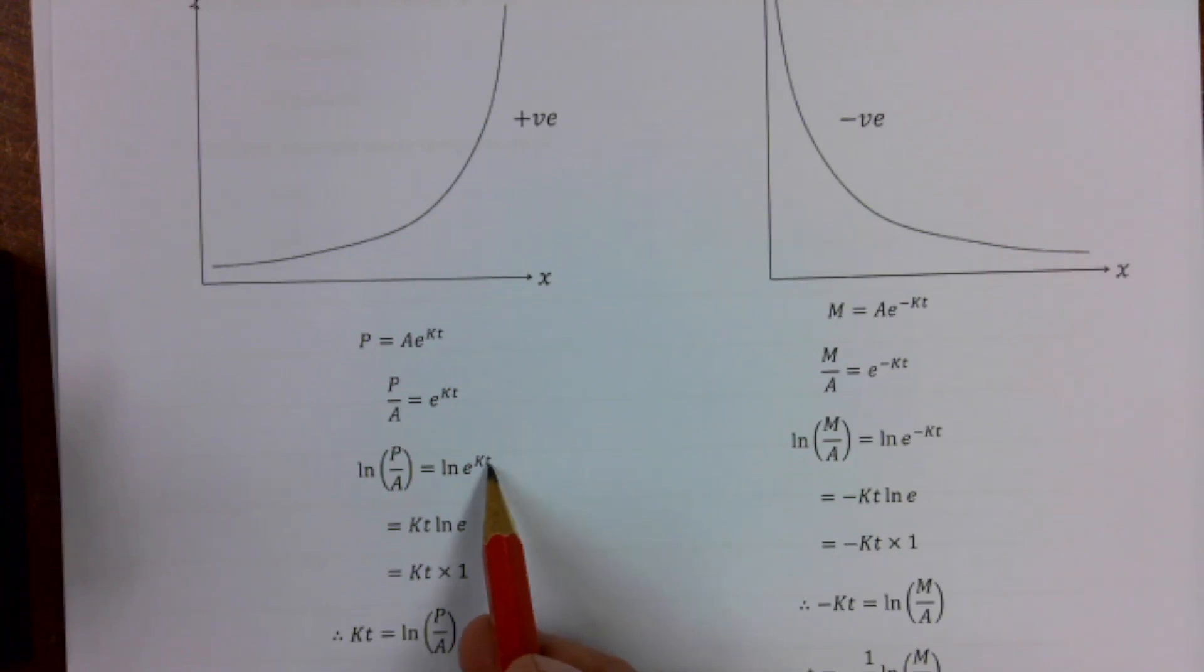Remember rules of logs that we can do. Bring that kt to the front, so kt·LN(e). LN(e), try it in your calculator. Those are the inverse of each other. It's nearly like finding the square root and then squaring something. They kind of cancel each other out. So LN(e) is just 1.